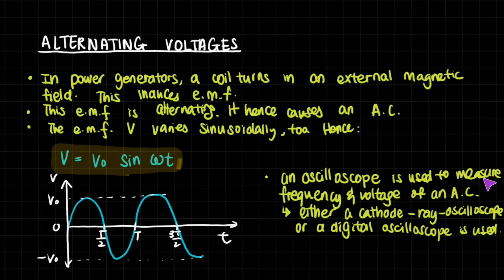An oscilloscope is used to measure the frequency and voltage of an alternating current. You can use either a cathode ray oscilloscope or a digital oscilloscope, and you need to be able to read them.